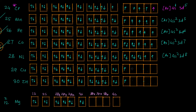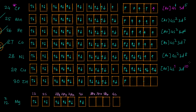For copper, as usual we would have been expecting 3d⁹, which would give Argon 4s² 3d⁹. But if one electron jumps from 4s, it makes the d orbital completely filled - 3d¹⁰. A fully filled d orbital together with half-filled 4s is more stable, so the configuration changes to Argon 4s¹ 3d¹⁰.